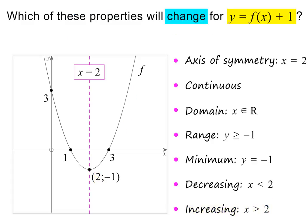Which of these properties will change for y equals f of x plus 1? Before answering this, let's first see what they are actually asking us here. Whenever a constant is added outside the function, it means that the graph must be shifted up. In other words, we are being asked what properties will change if the parabola lies in this new position.